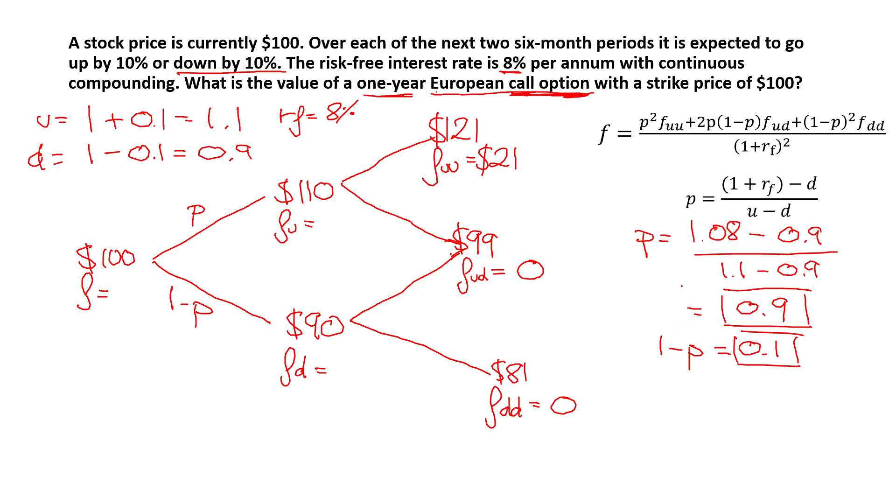Now that we have this, we can compute all the values we have into the formula for F. So F would be equal to P squared, which is 0.9 squared, times FU, which we know is 21, plus 2 times P is 0.9, times 1 minus P, which is 0.1, times FUD, which is 0, plus 1 minus P, which we know is 0.1, squared, times 0, which is FDD, over 1 plus the rest of the rate squared. So 1 plus 1.08, sorry, squared.